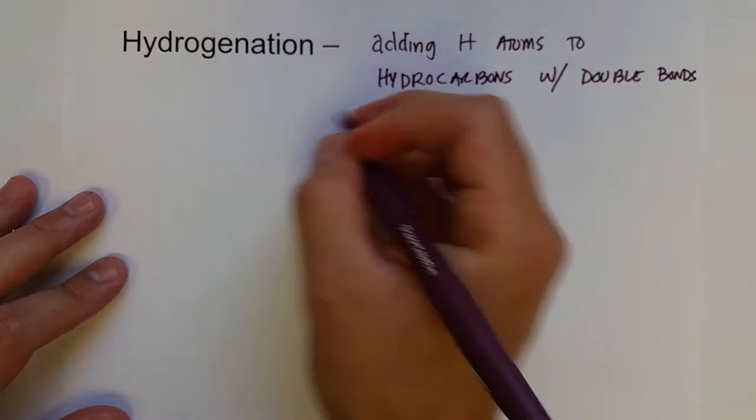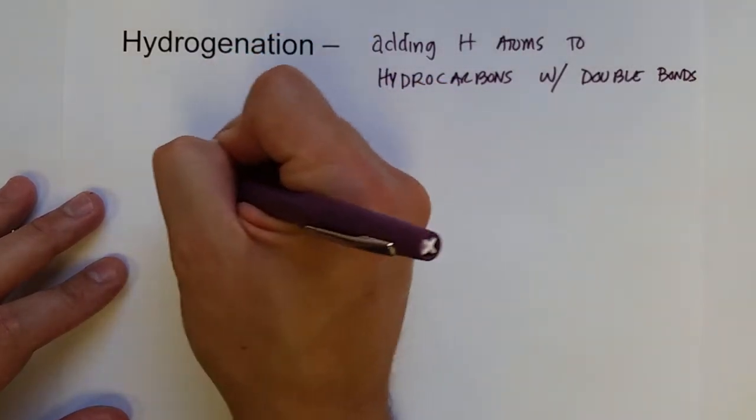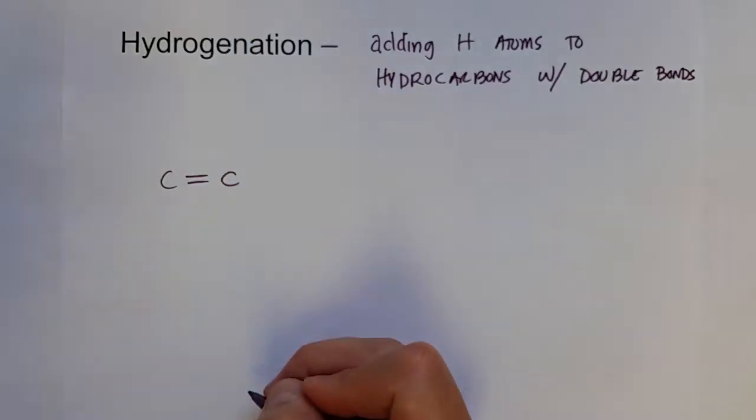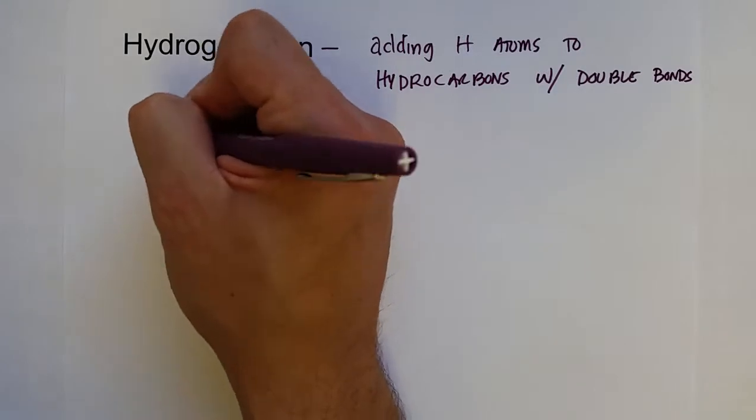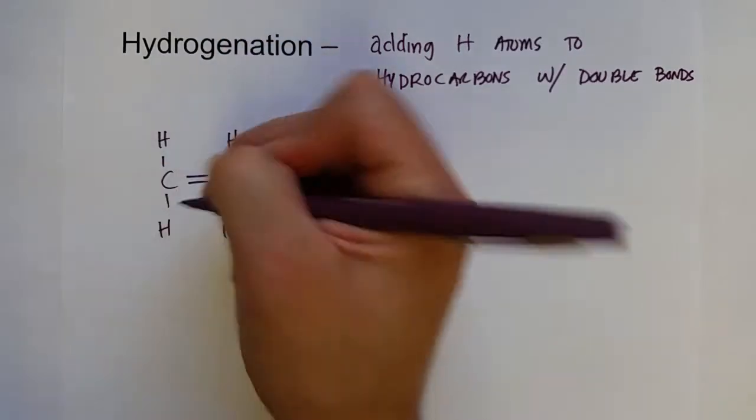And so we have some alkene, and so we've got a carbon double bonded to another carbon, and let's just say this is a very simple ethene. This is what is known as an unsaturated hydrocarbon.